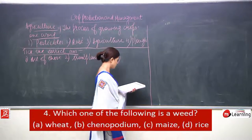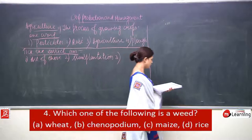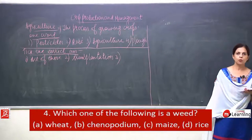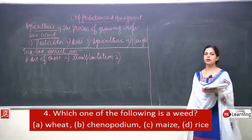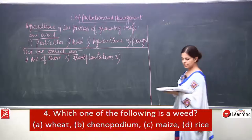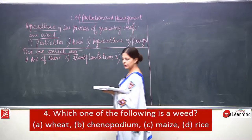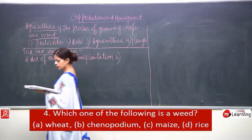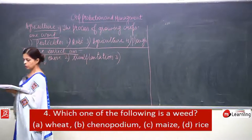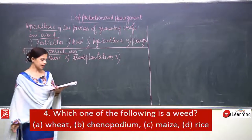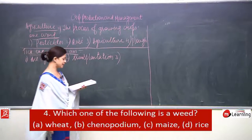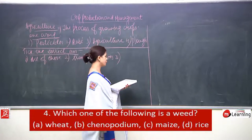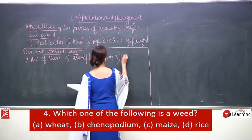Number 3: which one of the following is a weed? The options are wheat, chenopodium, maize, and rice. The answer is chenopodium.